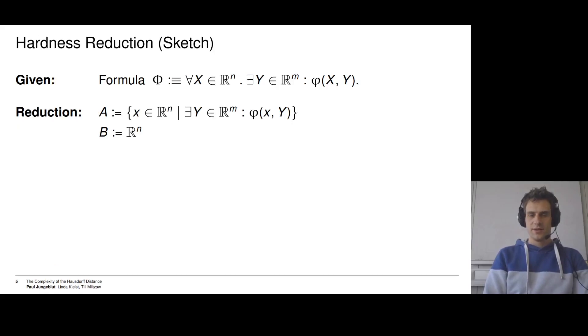We show hardness via a reduction, and the reduction idea is pretty simple. It easily fits on this one slide. For the reduction, we start with an instance of UETR. We are given this formula: for all x in ℝⁿ, exists a y in ℝᵐ such that φ(x, y) is true, and this whole formula is called Φ. Our reduction now needs to define two sets, A and B, the ones that define the Hausdorff distance instance.